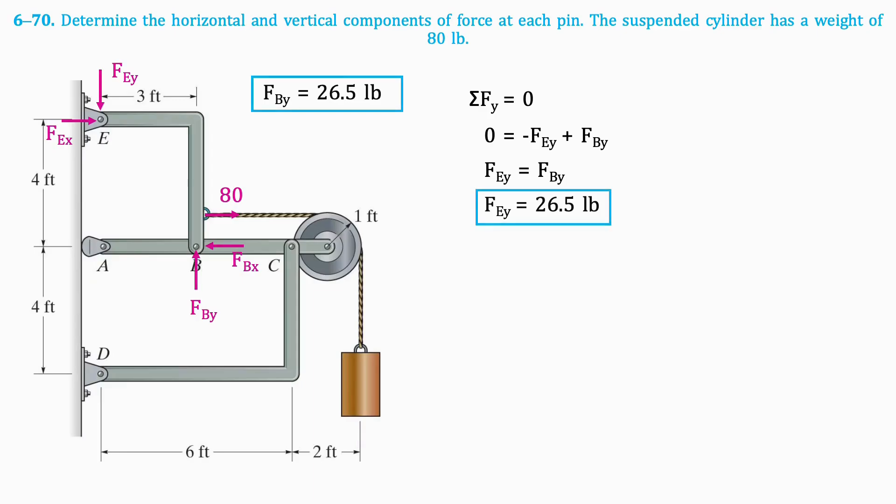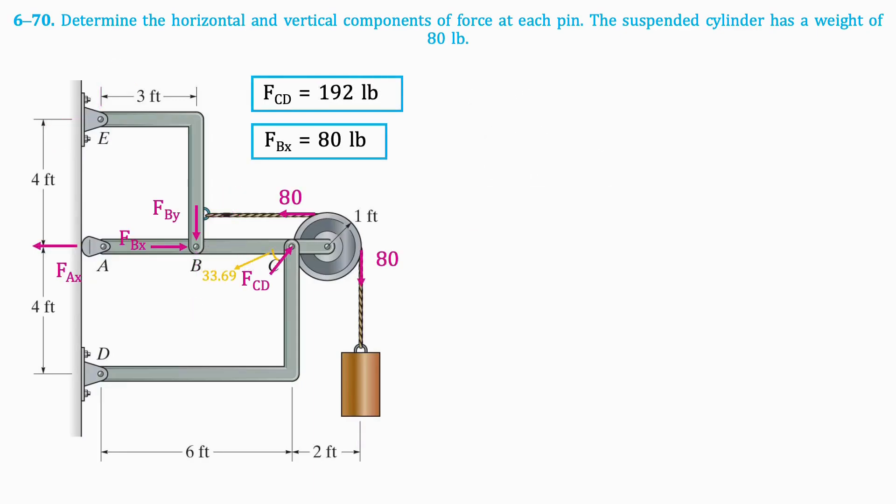Now we'll move back to member AC. We have now solved for all the values we need to find F_AX. If we take the sum of horizontal forces, we can isolate the resulting equation for F_AX. The result is 160 pounds.